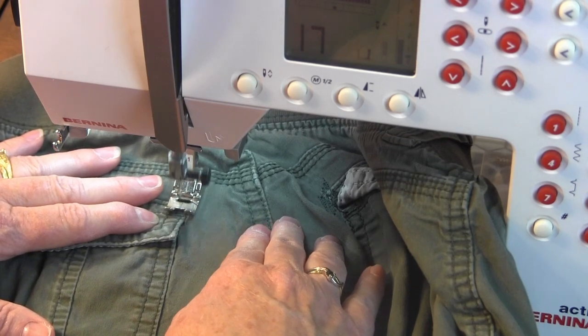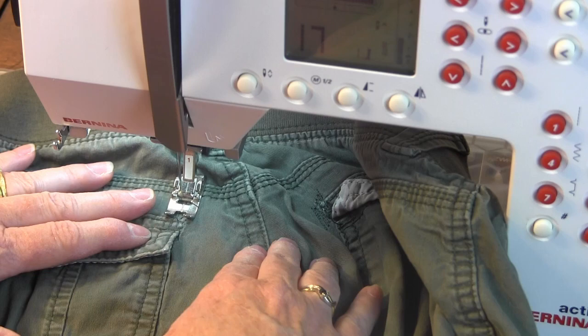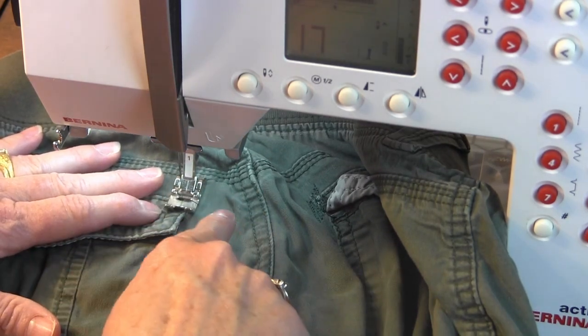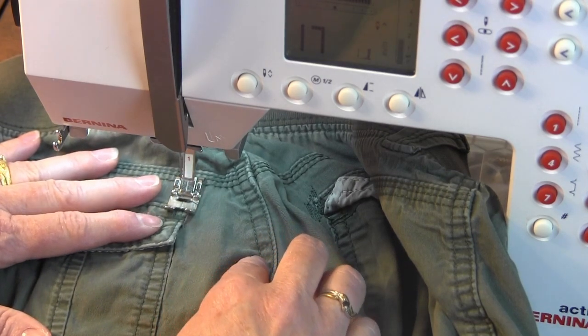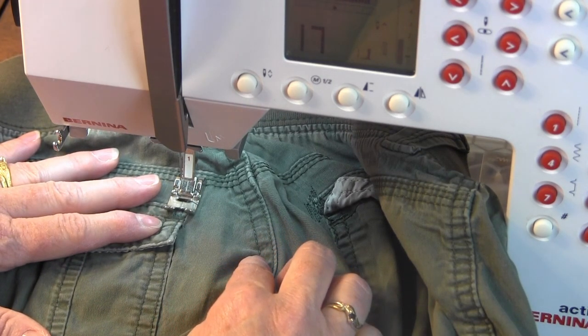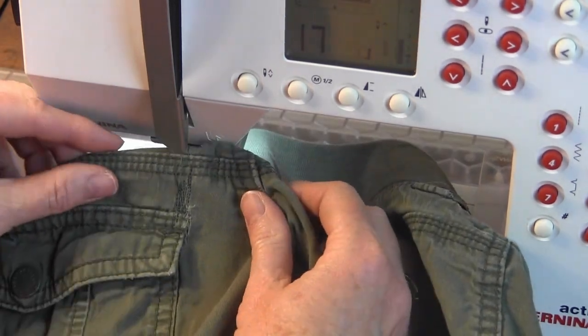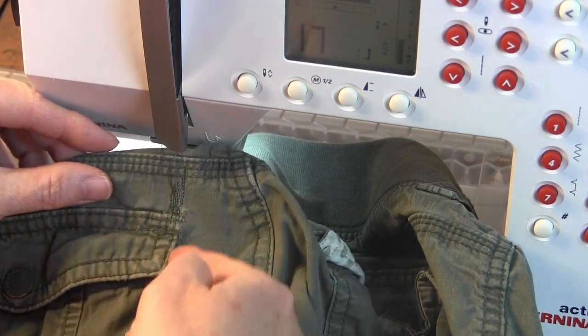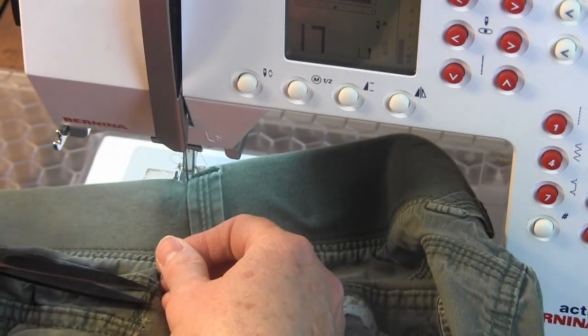It will continue to go backwards and forwards across, moving the needle over one step each time as it stitches the darning stitch. As you can see, the machine has stitched back and forth across the area. I need to stitch some more along the side there to finish going over top of the ripped area.